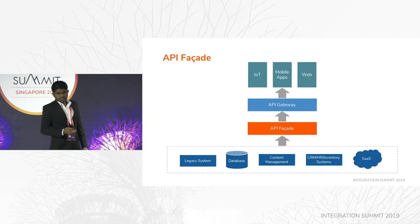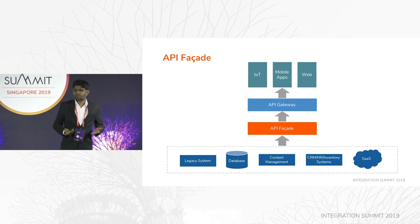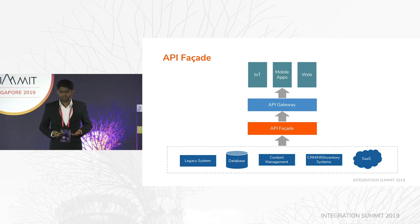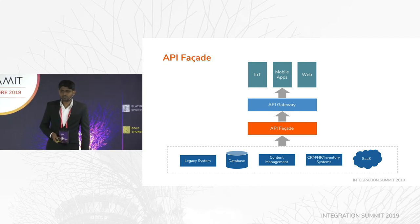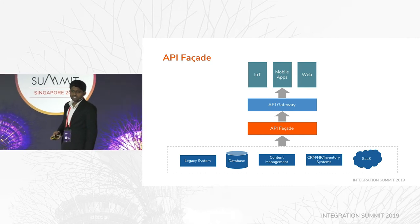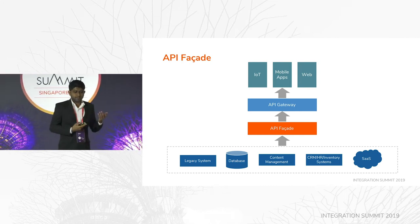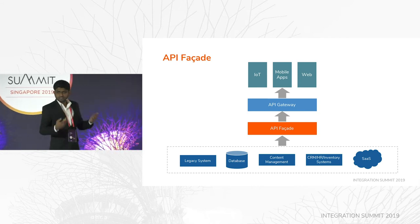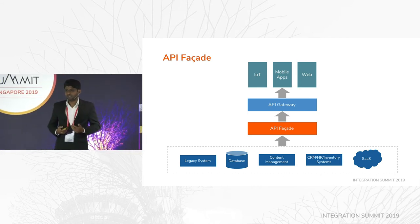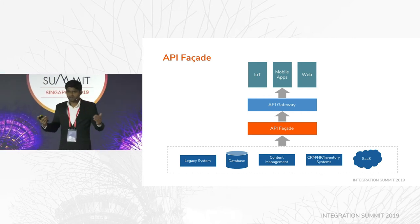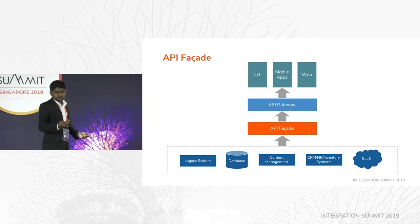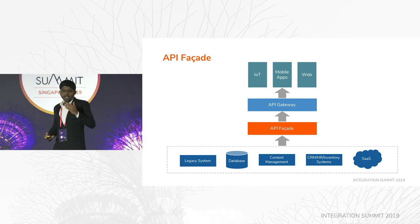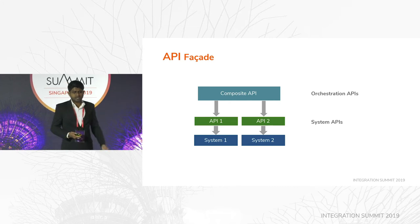Now let's get into the integration part: the API facade. In previous talks we covered the API gateway, and now we come to a new concept called the API facade. If we have a closer look, you have your backend systems — these can be legacy systems, SaaS applications, different kinds of things that don't talk in a RESTful manner. In the Super City example, they don't talk RESTfully. What you have to do is convert these backend systems to talk in a RESTful manner. These are called the system APIs — the things that we have to design first.